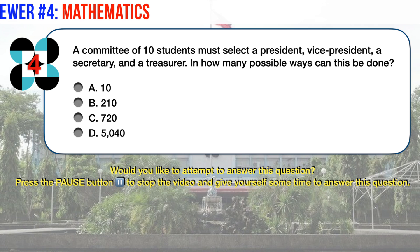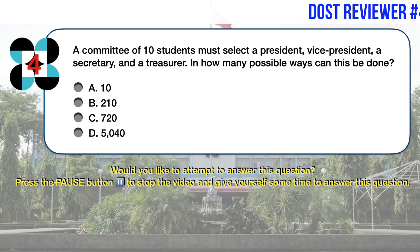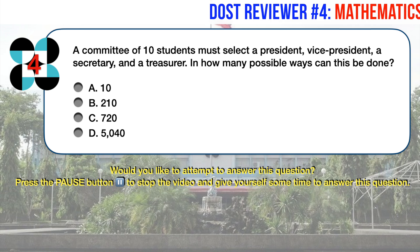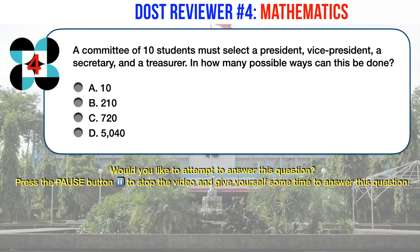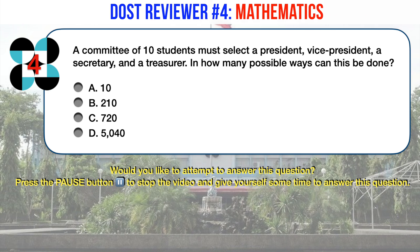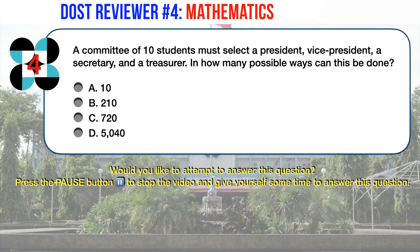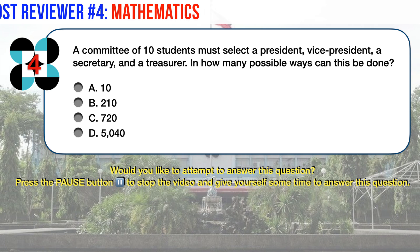Math question number 4. A committee of 10 students must select a president, a vice president, a secretary, and a treasurer. In how many possible ways can this be done? Options: A. 10, B. 210, C. 720, D. 5040.